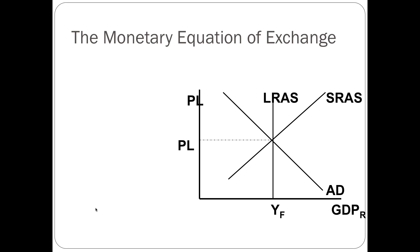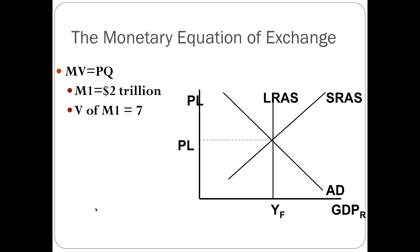Let's do an example with the monetary equation of exchange: MV equals PQ. Suppose M1 is $2 trillion and the velocity of M1 is 7, meaning the money in M1 is used to purchase goods in GDP 7 times per year. Therefore, PQ — nominal GDP — equals $14 trillion, because 2 trillion times 7 equals 14 trillion. On an AD-AS diagram, this represents the box of price level times output.